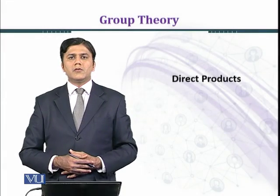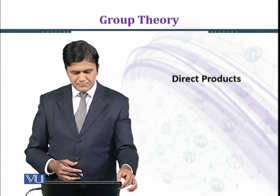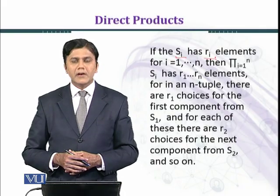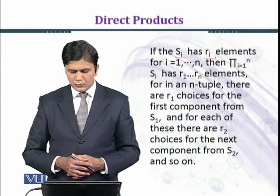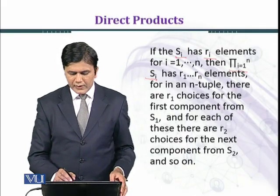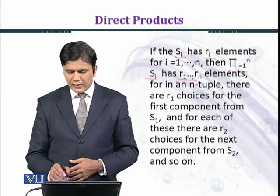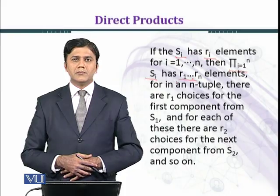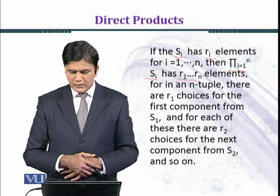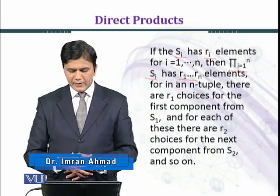In this module we shall discuss some examples. If Sᵢ has rᵢ elements for i equal to 1 to n, then the direct product ∏(i=1 to n) Sᵢ has r₁ × r₂ × ... × rₙ elements. So the order of the direct product equals the product r₁ × r₂ × ... × rₙ.